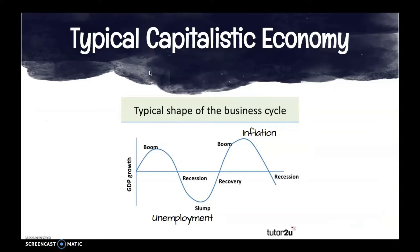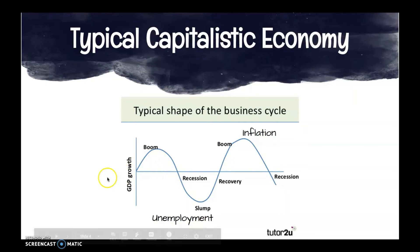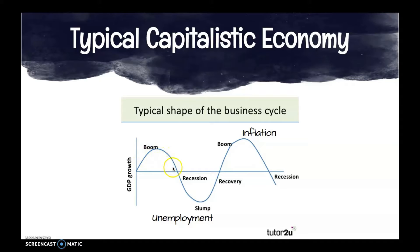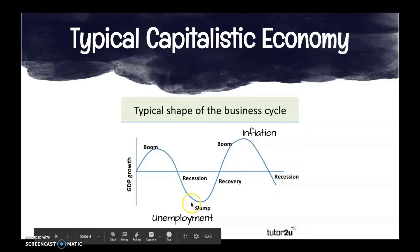Here we have the typical capitalistic economy — the typical shape of the business cycle. As you can see, there are ebbs and flows. This is a natural cycle. If you are talking about competition, business, and tax rates, you're going to have periods of growth but also periods of downturn. We call those periods of growth booms, and periods of downturn recessions, slumps, or depressions if they get that bad.